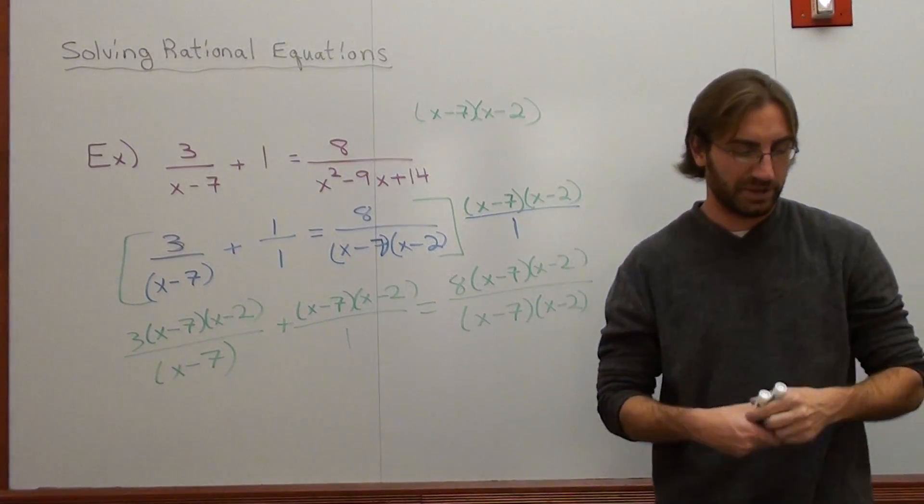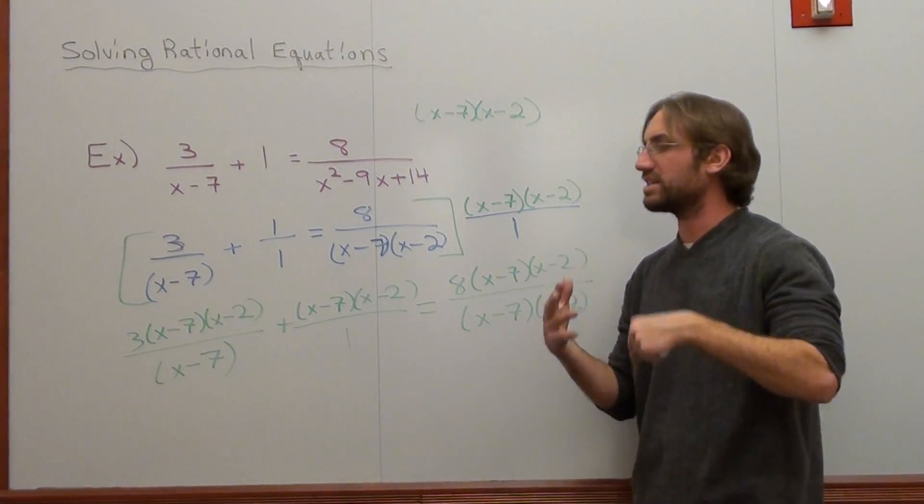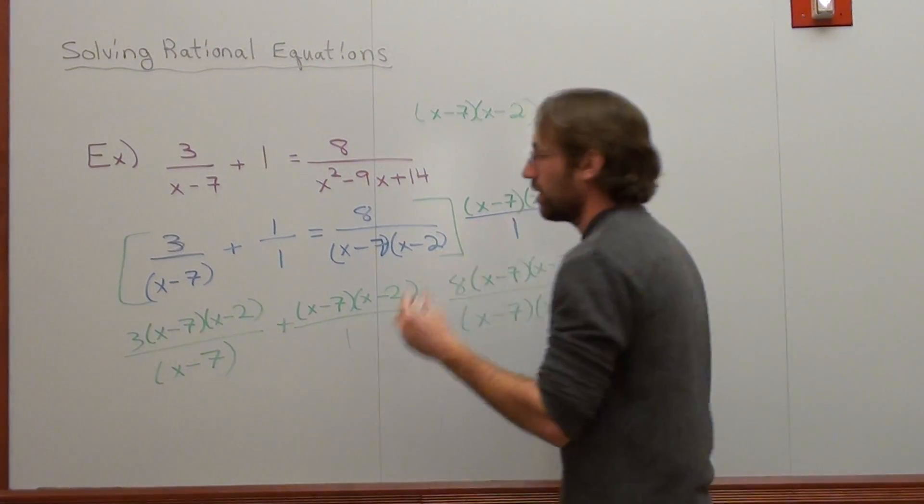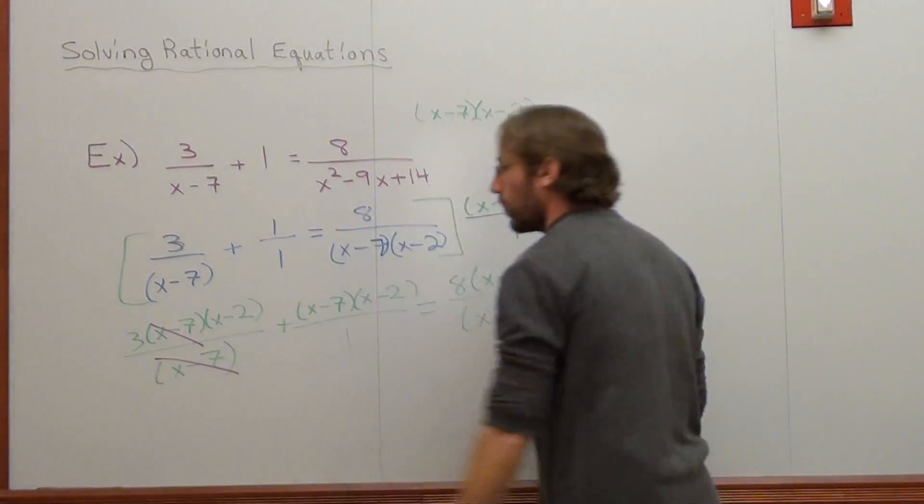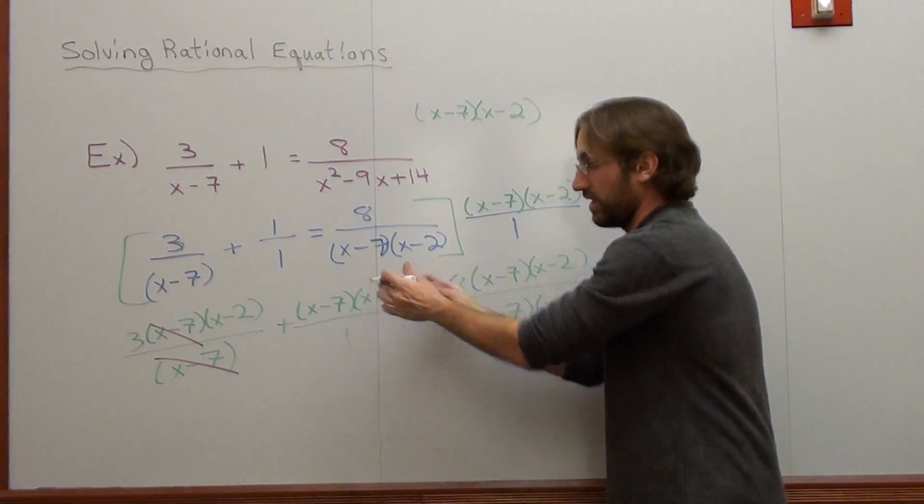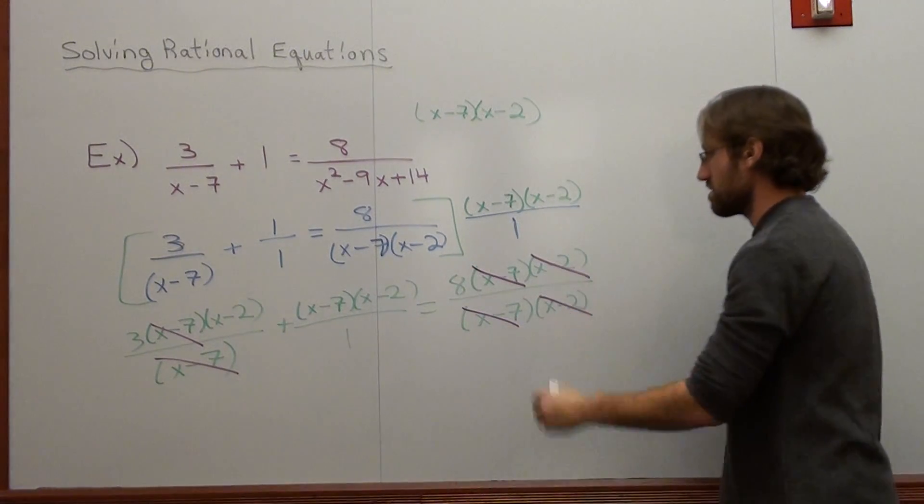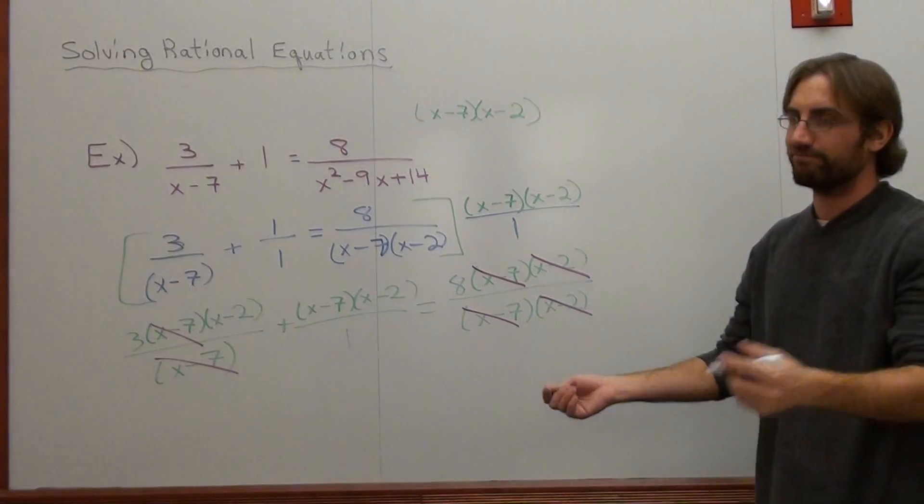Now watch the magic. This is why I multiply by the LCD, because it makes the problem manageable. You can't do that from side to side. You can only do that on each fraction. Nothing cancels too bad. Oh, I like this one, though.